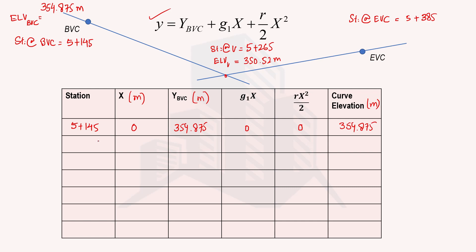The next station is exactly 40 meters away, giving stationing 5+185 with x equal to 40 meters. The BVC elevation remains 354.875 meters. For g1x, we multiply the gradient g1 by x: minus 3.629 percent times 40, giving minus 1.4516. For rx²/2, we first need the value of r, which we do not yet have.